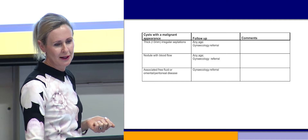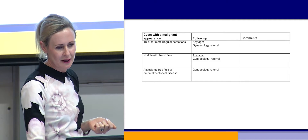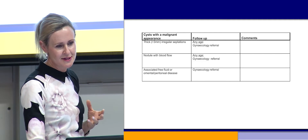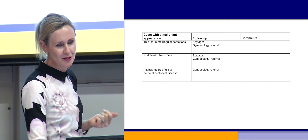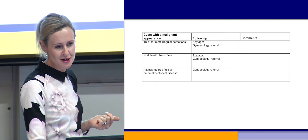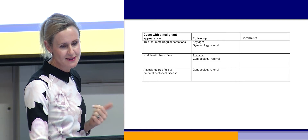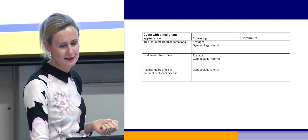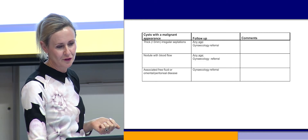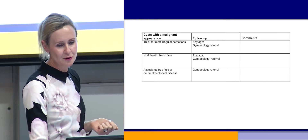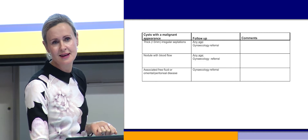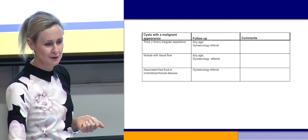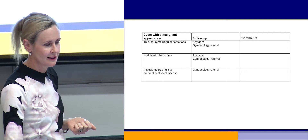Cysts with a malignant appearance are usually quite characteristic on ultrasound — they have thick irregular septations, nodules with blood flow, and associated free fluid indicative of omental or peritoneal disease. They all need tumour markers done and referral through to a gynaecologist.